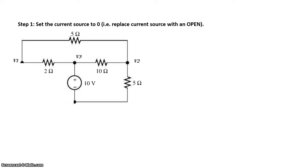Step one: we set the current source to zero. When a current source is set to zero, it basically means that that wire is open at that point.